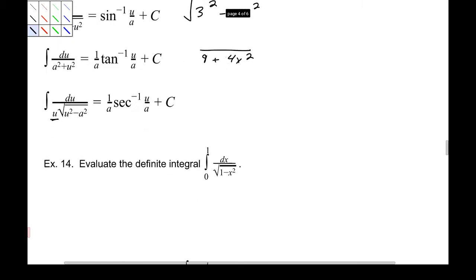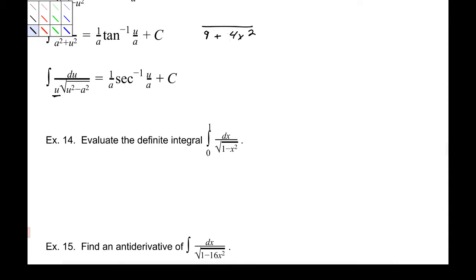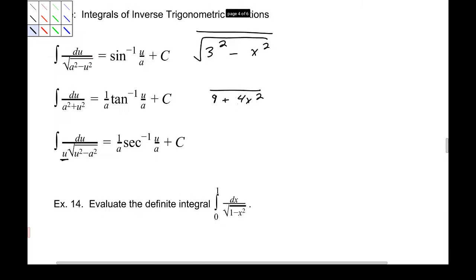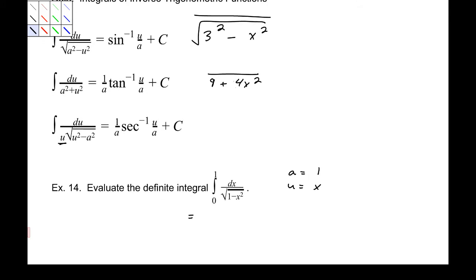Most of what we're going to be doing is application. So, evaluate the definite integral — the integral from 0 to 1 of dx over the square root of 1 minus x squared. That definitely looks like inverse sine. In this case, a is 1 — it's 1 squared — and u is just x. The limits stay at 0 and 1 since the variable of integration is really not changing — we're just switching the letter, not doing any work.